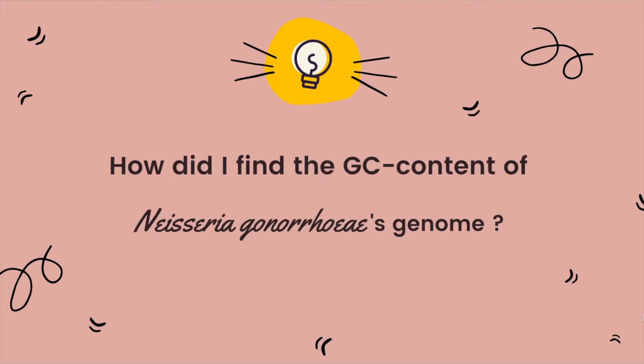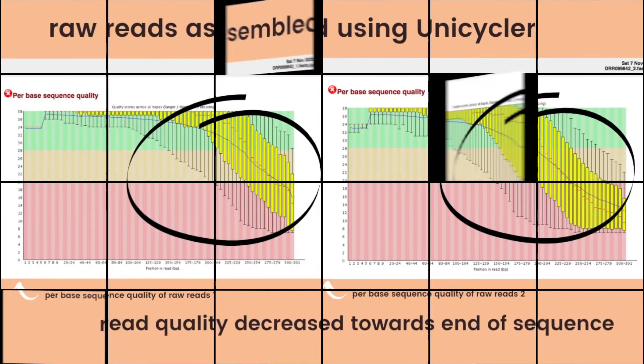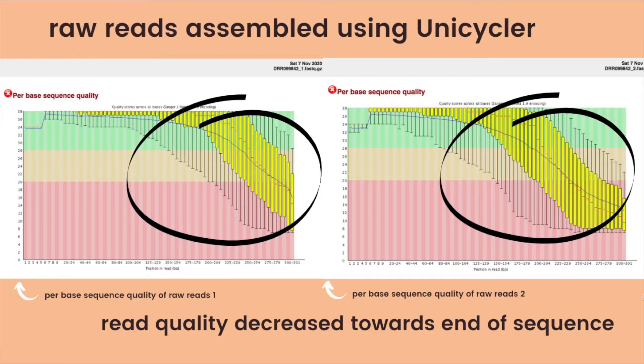So how did I find the GC content of Neisseria gonorrhoeae's genome? I first received raw reads of the bacterial genome and assembled it using Unicycler. Looking at its results, I found that the per-base sequence quality established that the read quality decreased toward the end of the sequence reads, meaning that there were errors in the sequences that would have led to misassembly.